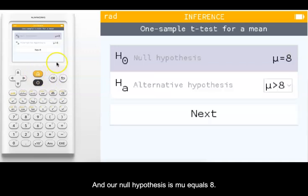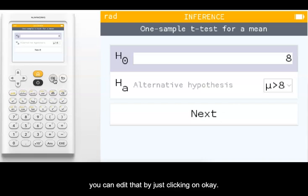Our null hypothesis is mu equals 8. If that value is not 8 on your screen, you can edit that by clicking on OK.